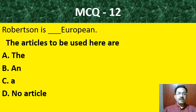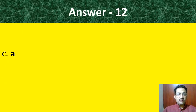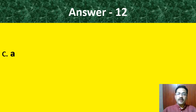MCQ question number 12: 'Robertson is — dash — European.' The article to be used here — the correct answer is 'a European,' because the sound at the start sounds like 'yu' and 'y' is a consonant.